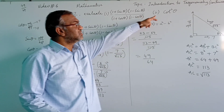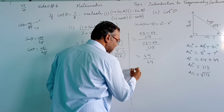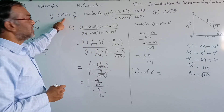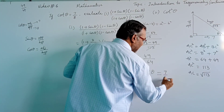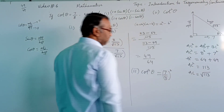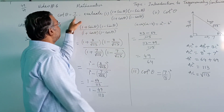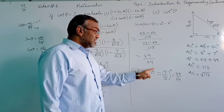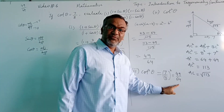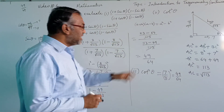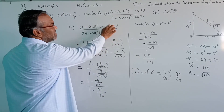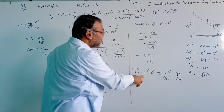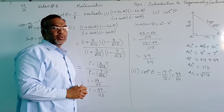Now let's solve the second one: cot squared theta. That is very easy. We know the value of cot theta is 7 by 8, so cot squared theta equals (7 divided by 8) squared, which equals 49 divided by 64. The same answer is coming: 49 divided by 64. Now the question arises — why do we get the same answer for both expressions?